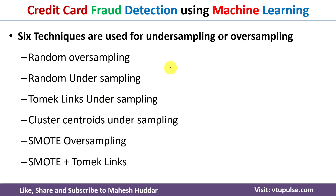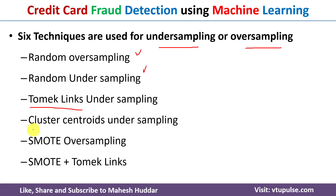Since the dataset is imbalanced, we need to convert it into a balanced form. For that we can use under-sampling or oversampling techniques. I will do random oversampling and random under-sampling first, and then I will use two different under-sampling techniques known as Tomek Links and Cluster Centroid under-sampling. Next I will use SMOTE oversampling as well as SMOTE plus Tomek Links for converting the imbalanced dataset into a balanced dataset.